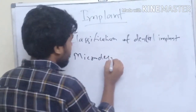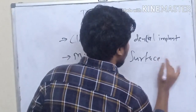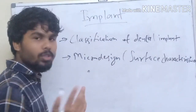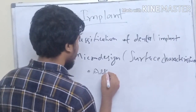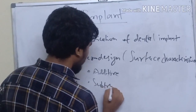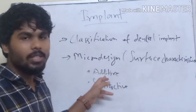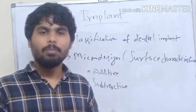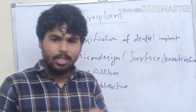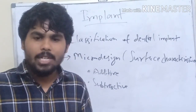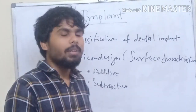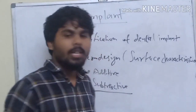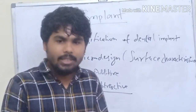There are two processes for surface modification: one is additive and the other is subtractive. In the additive process, materials are added to the implant to improve surface characteristics — inorganic mineral coatings, plasma spraying, or biocompatible materials like fluoride and hydroxyapatite are coated on the implant body. In the subtractive process, sandblasting, acid etching, or machining can be done.